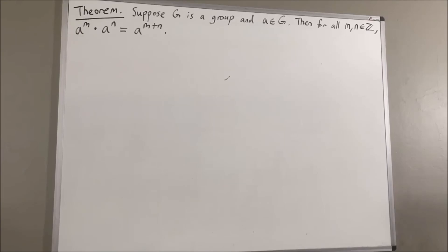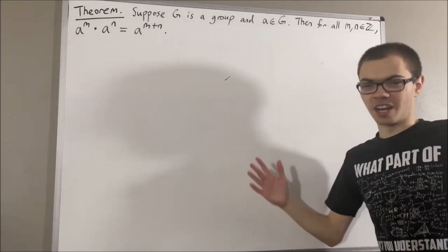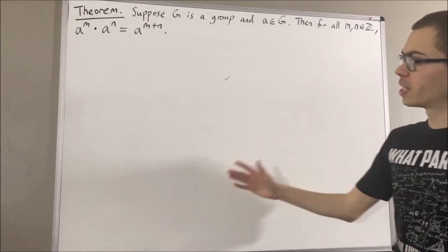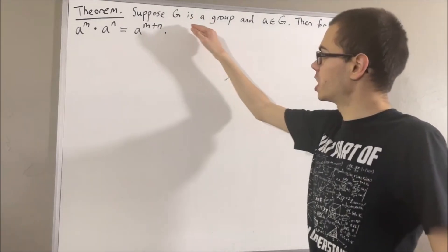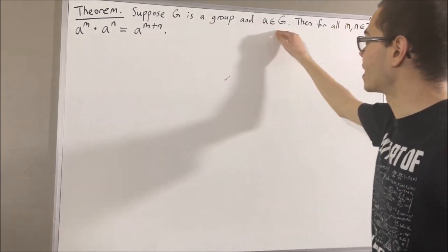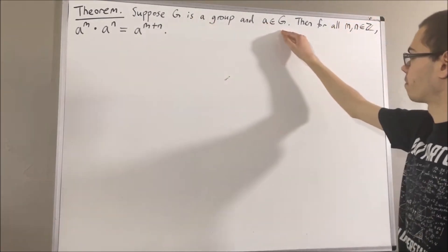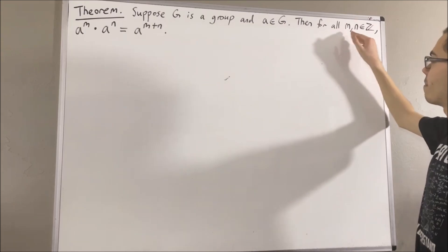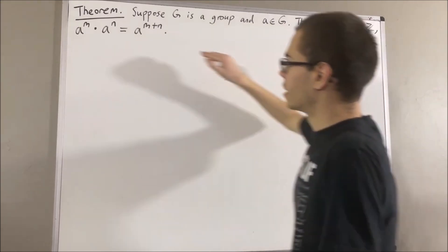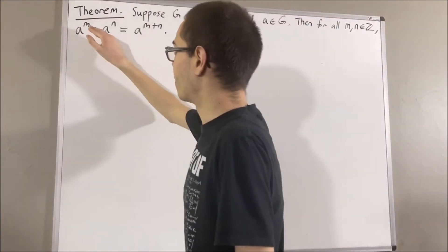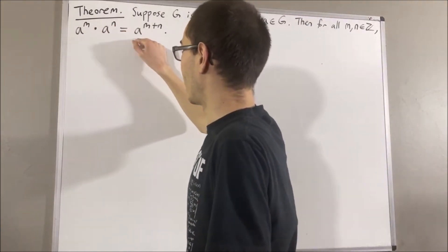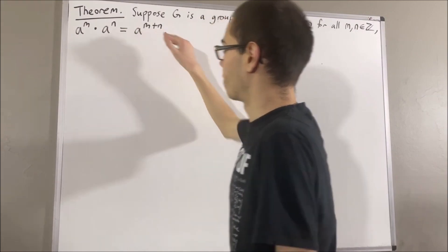Hello. In this video, we are going to prove the following theorem. Suppose G is a group and A is an element of G. Then for all integers M and N, A to the M times A to the N is equal to A to the M plus N.